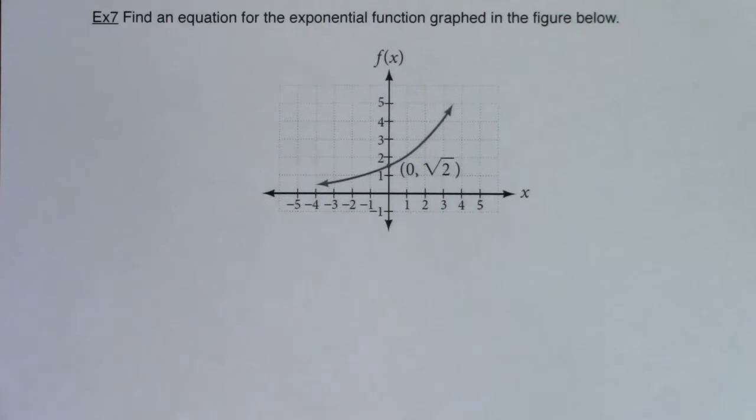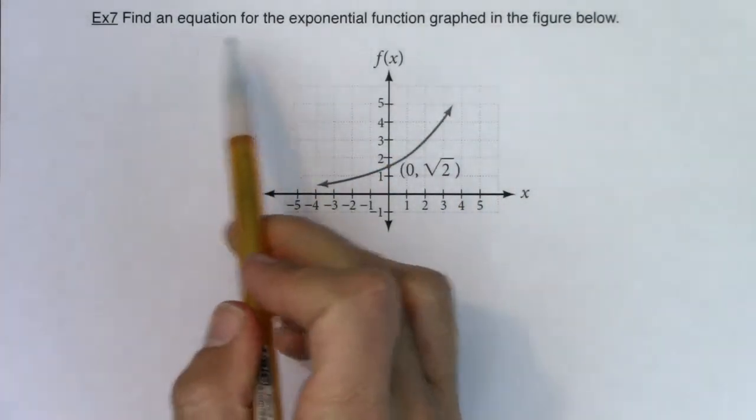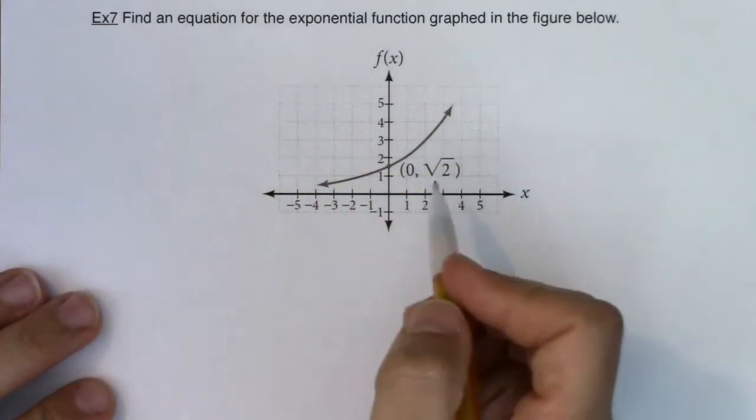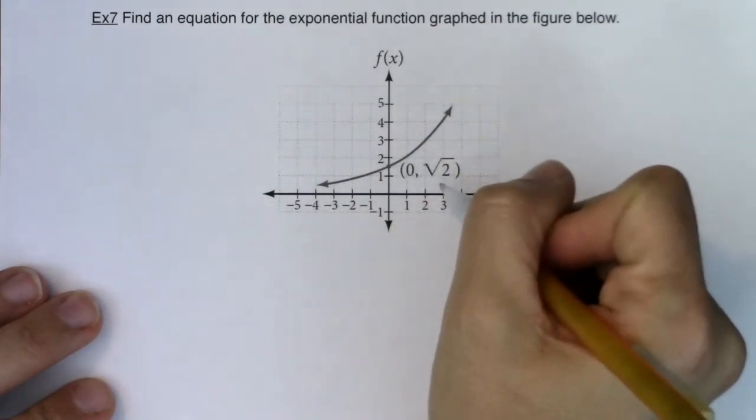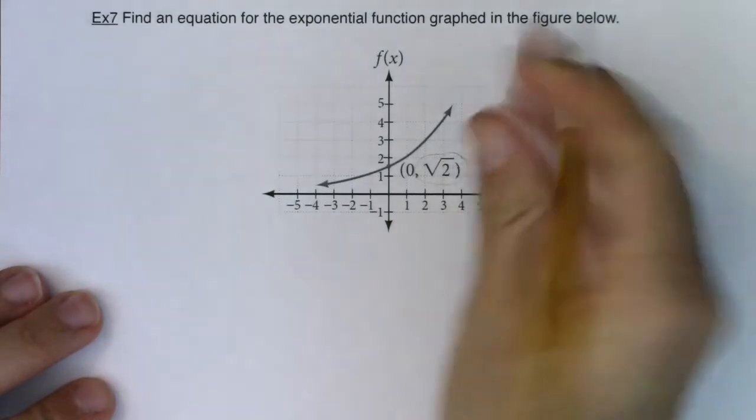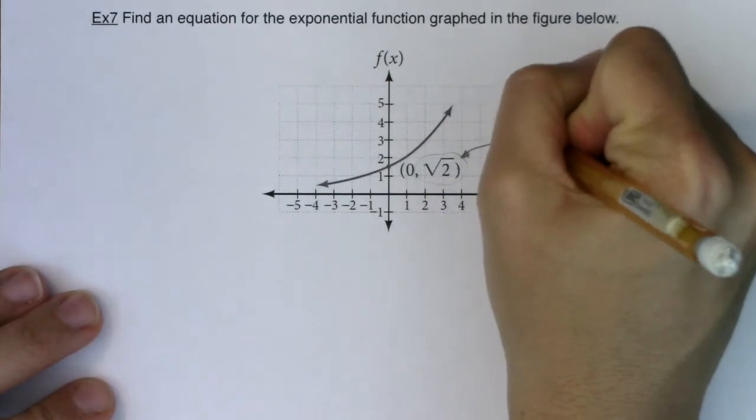Hey Math 31, welcome back for one more problem where we're given a couple of ordered pairs and we want to find the exponential function that models this graph. So find an equation for the exponential function graphed in the figure below. I can see one ordered pair here at 0, √2, and you can get excited because you were given an initial value. That's going to make your life a little bit easier.